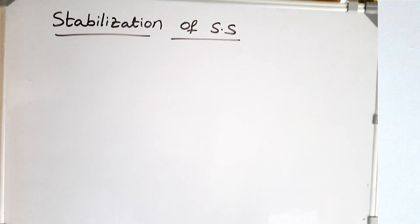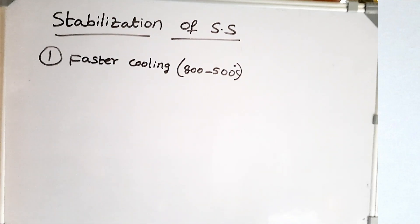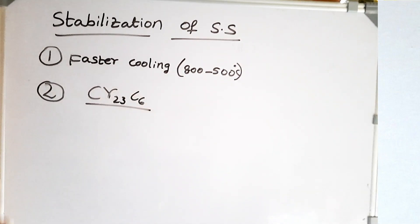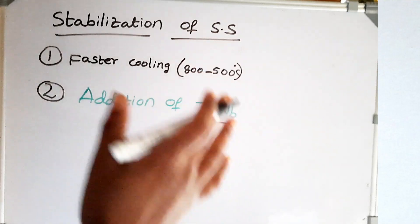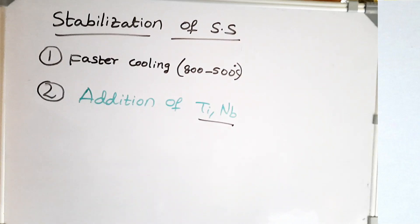Weld decay is a major, completely undesirable defect. The methods to stop weld decay or sensitization of stainless steel are called stabilization of stainless steels. Faster cooling in the chromium carbide formation region is one method, but its drawback is that welding those steels causes weld decay again. Another method: if we add alloying elements whose carbide is more stable than chromium carbide, there is no carbon left for chromium to form chromium carbide. Addition of titanium and niobium forms carbides more stable than chromium carbide, solving the problem of weld decay and sensitization.